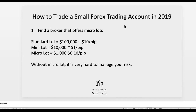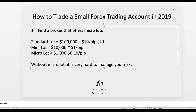As you can see from our PowerPoint screen, the first tip we have for you would be to find a broker that offers micro lots. Normally in trading, we have three kinds of lots. One is a standard lot, which in MetaTrader is a position size of one. This represents a value of 100,000 and is equivalent to about $10 per pip for the majors.